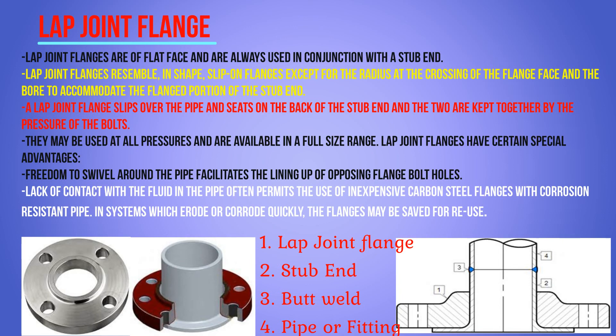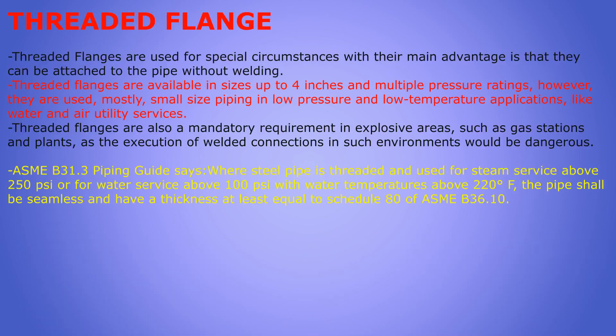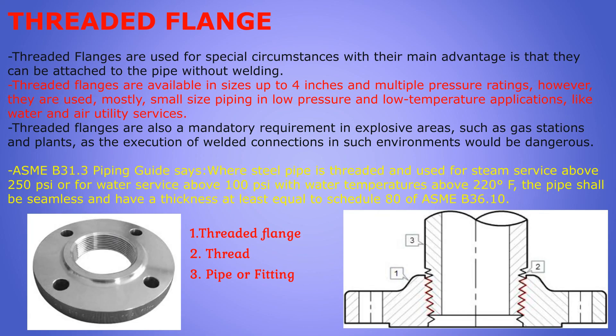Lap joint flanges have certain special advantages, for example freedom to swivel around the pipe, which facilitates the lining up of opposite flange bolt holes. Lack of contact with the fluid in the pipe often permits the use of inexpensive carbon steel flanges with corrosion-resistant pipe in systems which erode or corrode quickly. Flanges may also be saved for reuse. In the picture, point one is the lap joint flange, two is the stub end, three is the butt weld, and four is the pipe or fittings. The swivel flange easily rotates on top of the stub end.